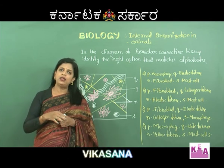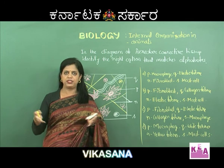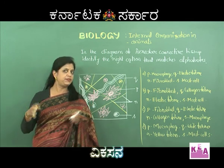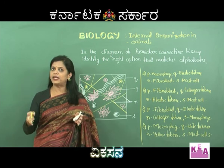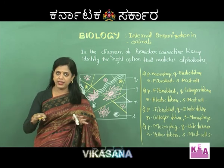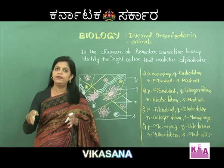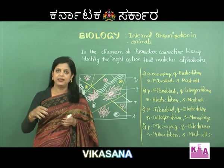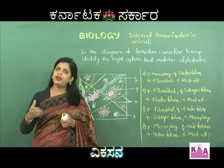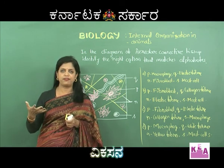All connective tissues will have first a matrix, in which some cells are there and some fibers are there. That is the basic pattern of all types of connective tissues. They will have matrix - either liquid or solid - then they have certain types of cells, and then there are fibers that give a network or framework for the tissue.